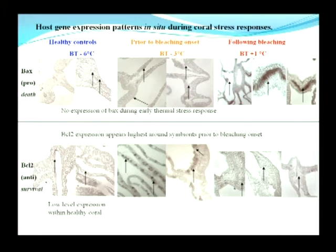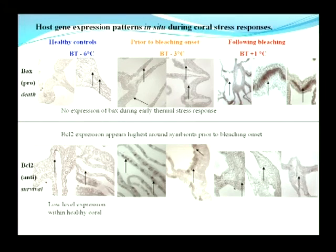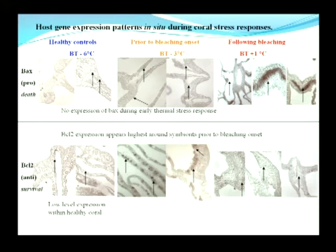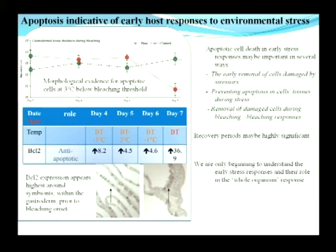Using this approach to look at micro-scale gene expression in bleaching — showing a death gene at top and a survival gene at bottom, at healthy, pre-bleaching, and bleaching temperatures — we can clearly see localisation of BCL2 expression around the algal symbionts within the gastrodermal tissue layer, which is not evident in healthy tissue. We also see an upregulation of the death gene following bleaching and a breakdown of the symbiosis.